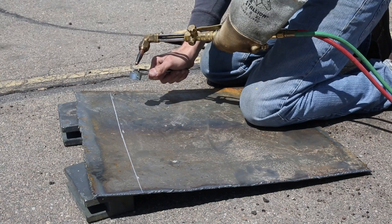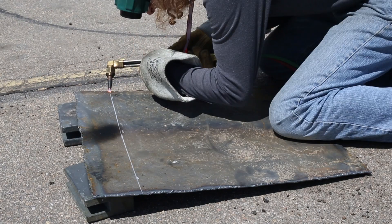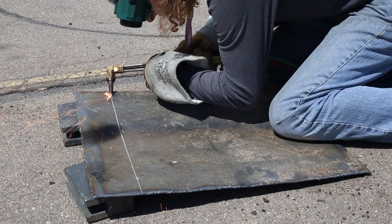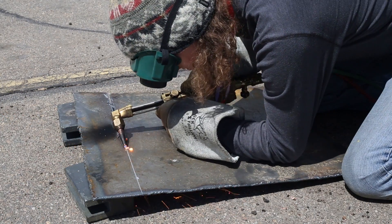First, I needed to cut the metal. I used our oxyacetylene torch. For this, you heat up the metal until it's red hot. Then, by pressing a lever, you blast it with oxygen to remove the metal.